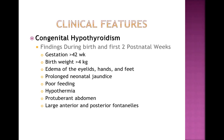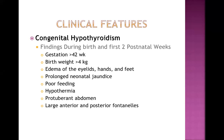Other neonatal features include poor feeding because these babies are lethargic and sleep most of the time, sometimes choking. Hypothermia - decreased temperature - is very common. Protuberant abdomen, also known as umbilical hernia or pot belly, is very common. Large anterior and posterior fontanels, especially the anterior fontanel which is large and does not close at the normal time of 18 months - it may remain open until two or three years. The posterior fontanel, normally closed at around six months, also remains open.